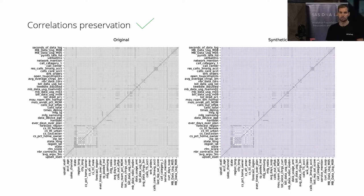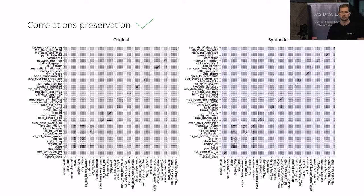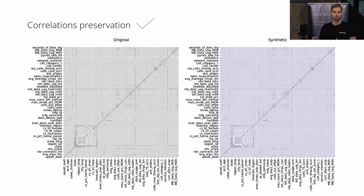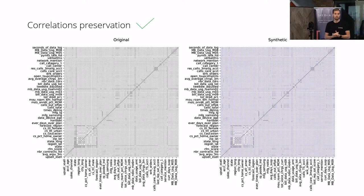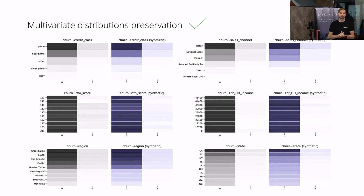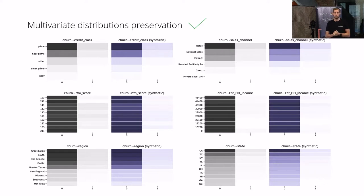Moving to the correlations, we have a correlation matrix comparing the original data on the left side and the synthetic data on the right side. Normally a correlation is between minus one and plus one, but for illustrative purposes we indicated it with color intensity to compare the patterns — and we see similar results. Then for the final part of our quality report, the multivariate distributions, we combine variables and the frequency of those combinations. Even there we see similar results — for example, the combination of clients that churned in a certain segment shows similar patterns.